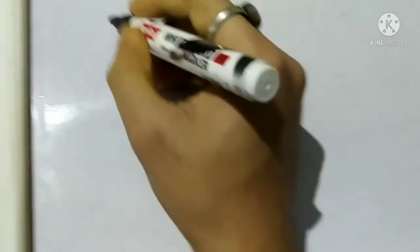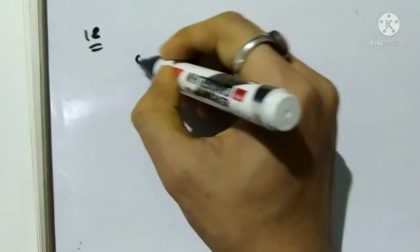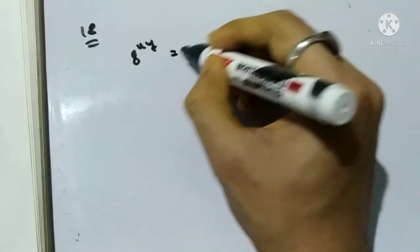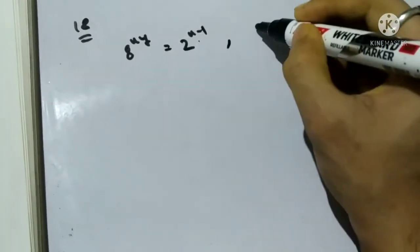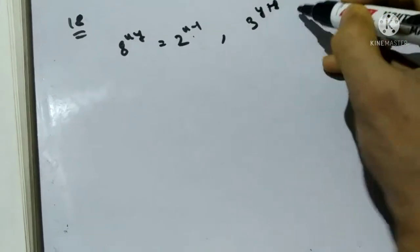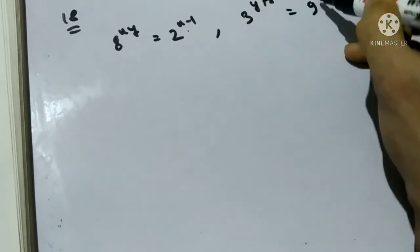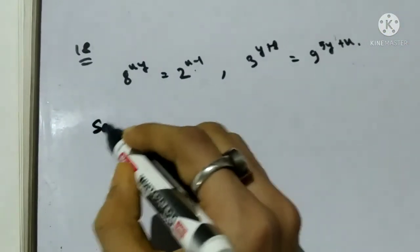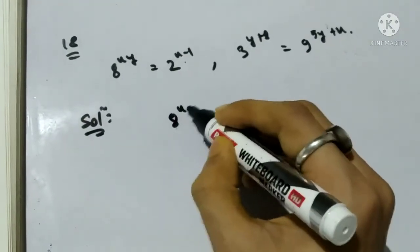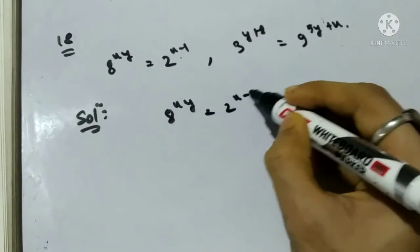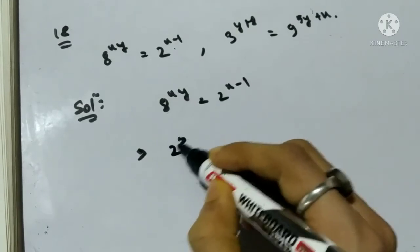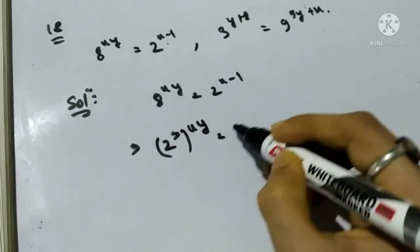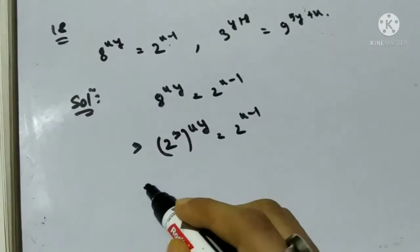Question number 18: 8^(xy) equals 2^(x minus 1) and 3^(y plus 8) equals 9^(5y plus x). From the first equation: (2³)^(xy) equals 2^(x minus 1), so 3xy equals x minus 1.